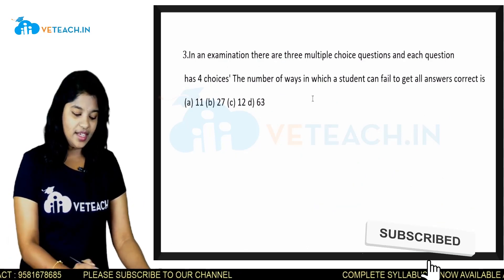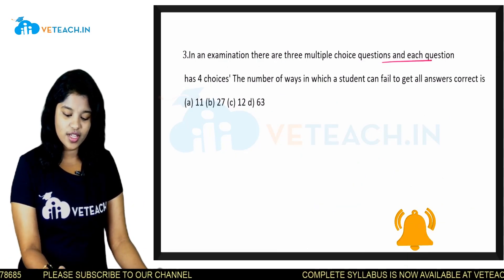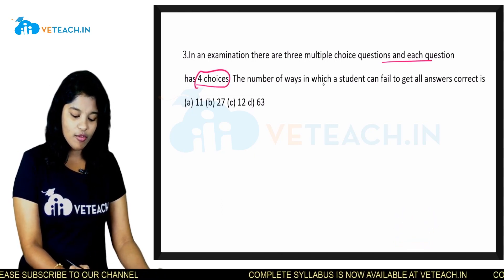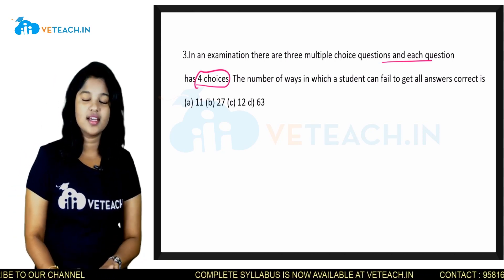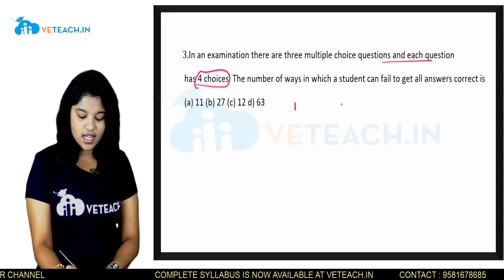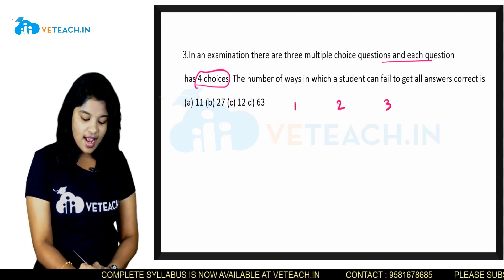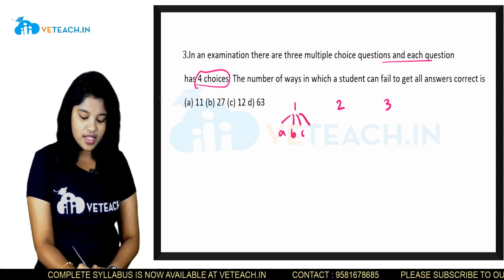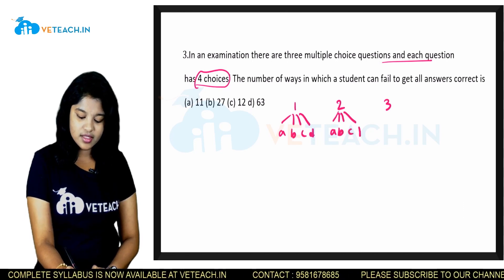See the next question. In an examination, there are 3 multiple choice questions and each question has 4 choices. The number of ways in which a student can fail to get all answers correct is — let us understand the question. There are 3 multiple choice questions, each with 4 options: A, B, C, D.